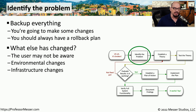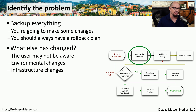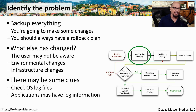It might also be good to look at documentation from the change control board to see what may have changed in the environment that the users may not know about. A single change to a router or firewall could have a dramatic effect on how an application might perform, and the only way you would know that change was made is by looking at the change control board documentation. The application or operating system itself may also have a set of log files that give you more insight into the problems occurring for this user.